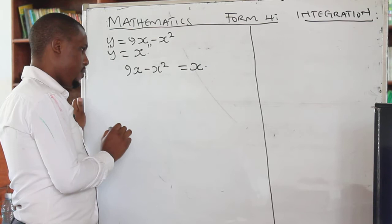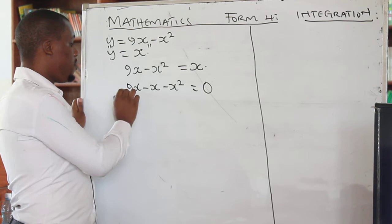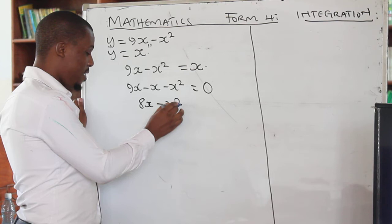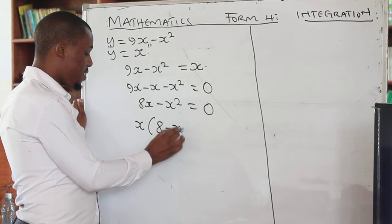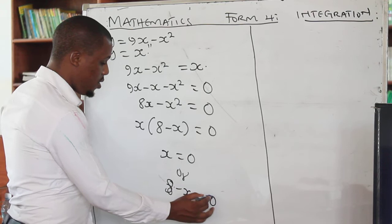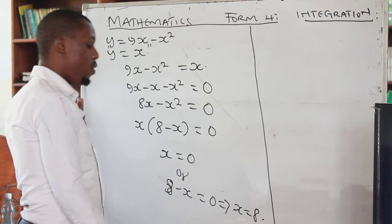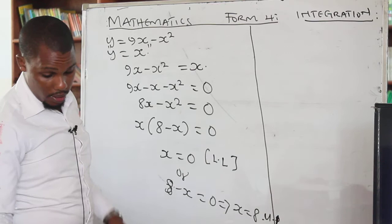Bringing x to the left side: 9x − x − x² = 0, which simplifies to 8x − x² = 0. Factoring: x(8 − x) = 0, so x = 0 or x = 8. Therefore x = 0 is our lower limit and x = 8 is our upper limit.